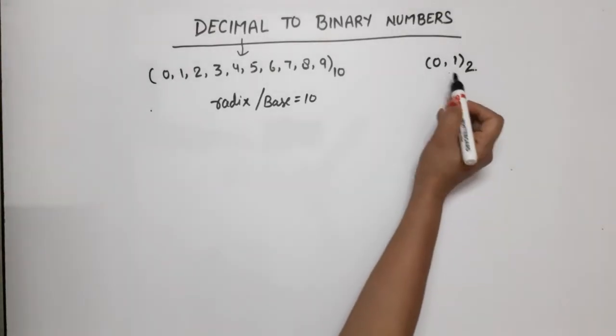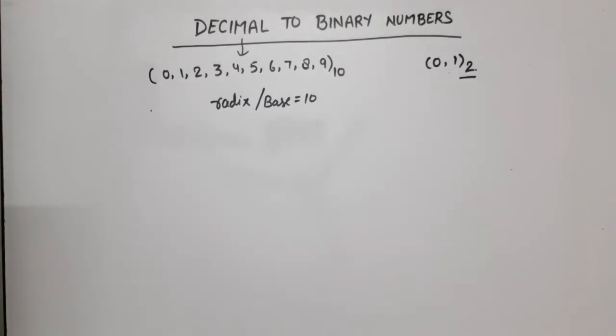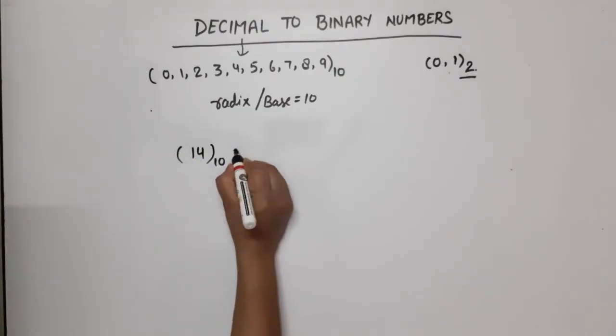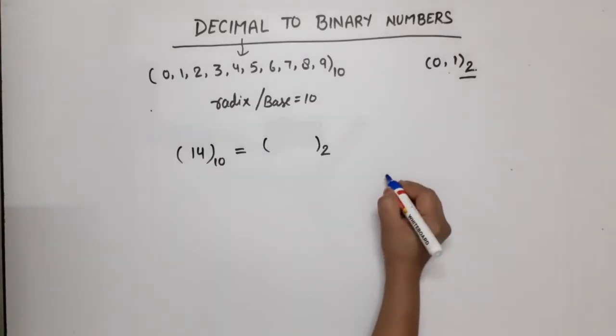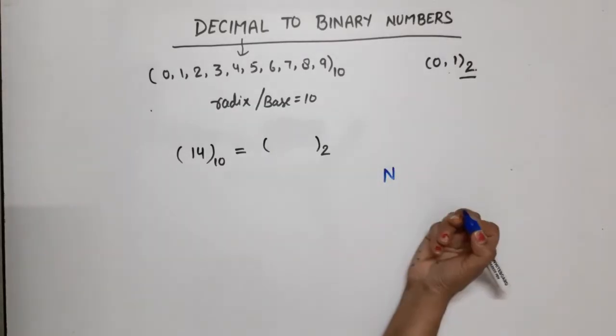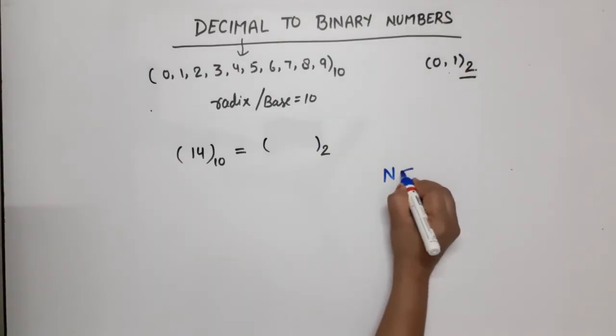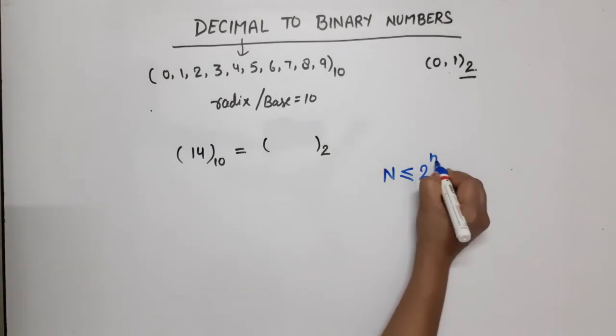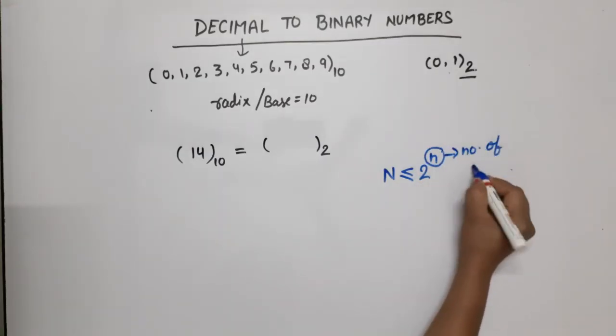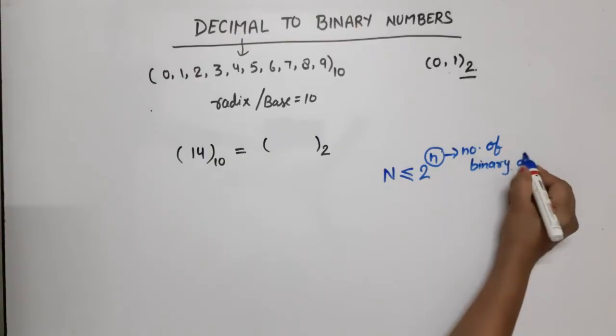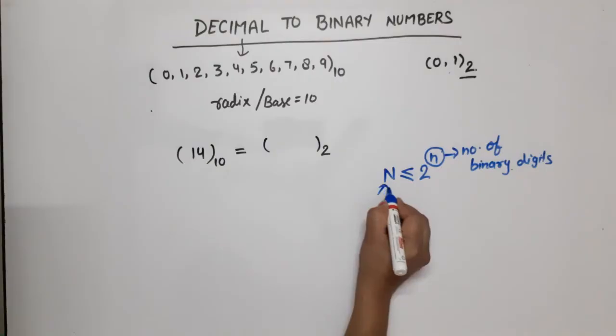Let's take an example. Suppose we have 14 in decimal and we have to find its binary value. For this you have to remember a general equation for converting any decimal number into binary. Suppose capital N is the decimal number - this number should be less than or equal to 2 raised to power small n, and this n is the number of binary digits.